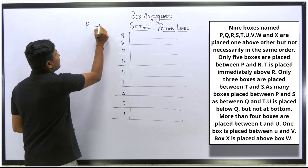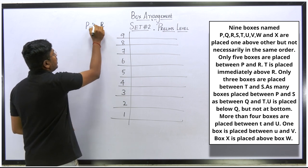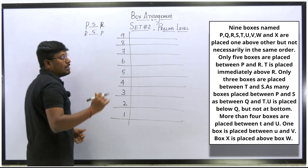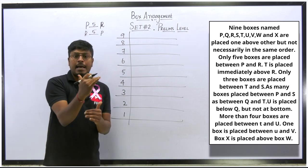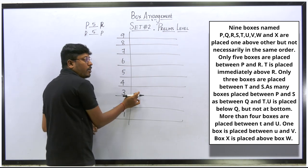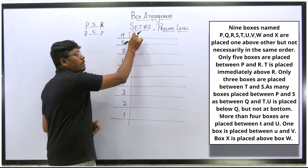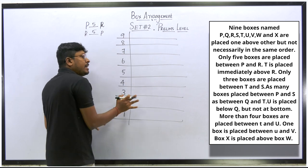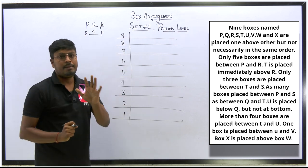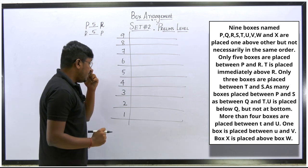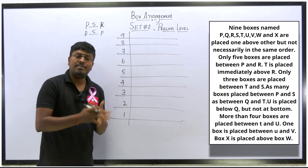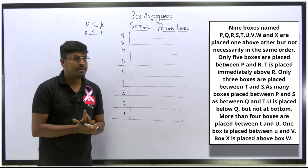First point: only five boxes are placed between P and R, meaning there is a gap of five boxes between them. Either P can be at the top and R at the bottom, or R at the top and P at the bottom. Since none of the clues are direct statements, we should draw possible diagrams. Let me read two to three more lines before deciding.